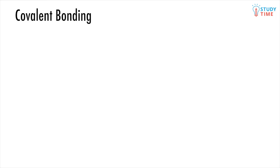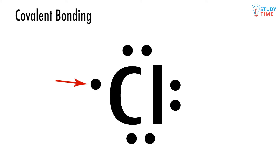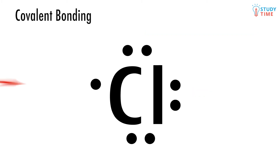Remember that electrons always come in pairs, and if there is an odd number of electrons, there will simply be a single remaining one. Chlorine has three complete pairs of electrons, and it has a single remaining electron. This is great, but chlorine never exists on its own with seven valence electrons.